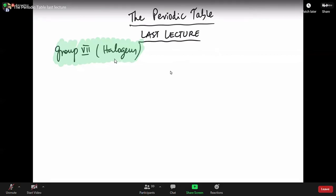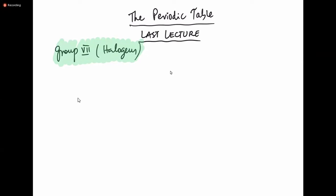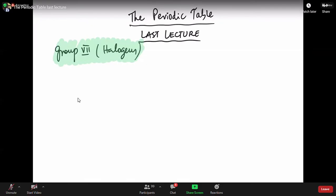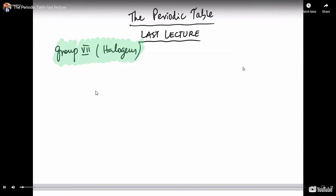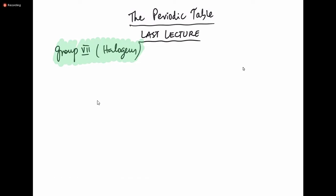We've been learning the periodic table and this is the last lecture of the periodic table. In the halogens section, we learned the reactions of halogens — first was reaction with metals, and second was displacement, and both were examples of redox reactions.